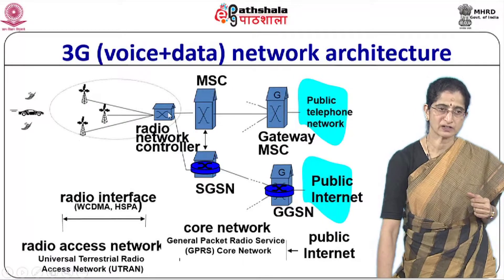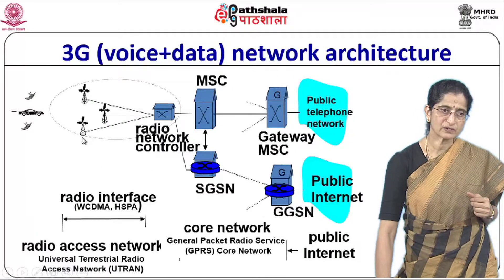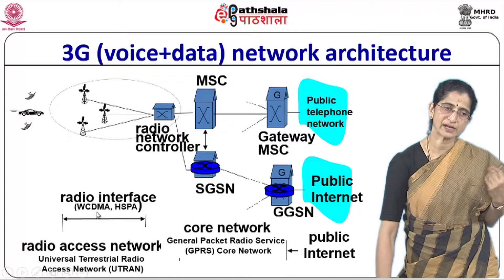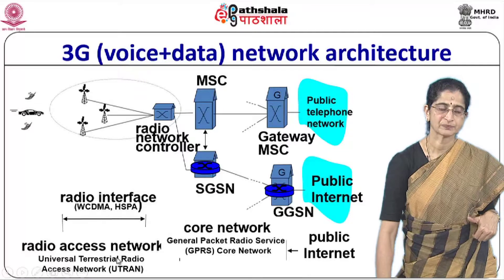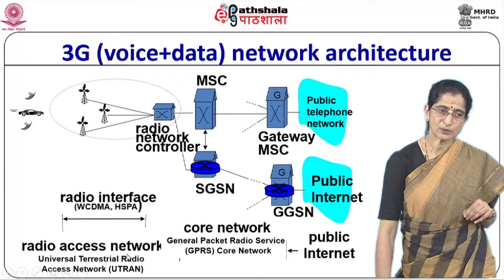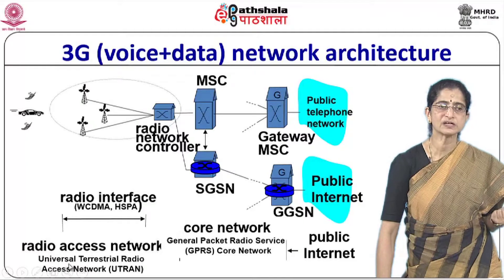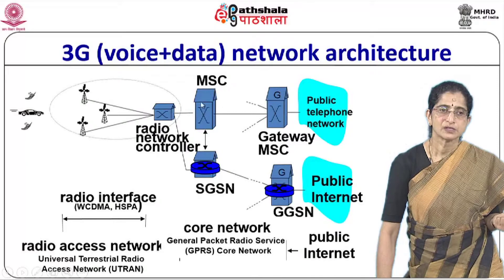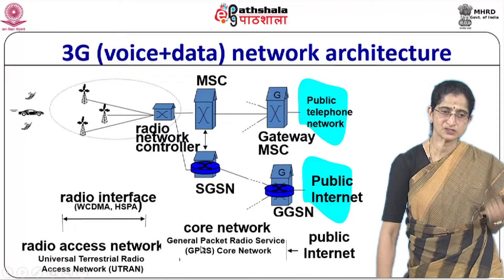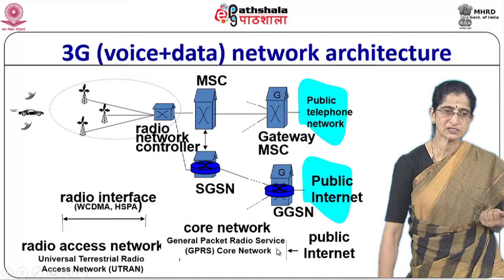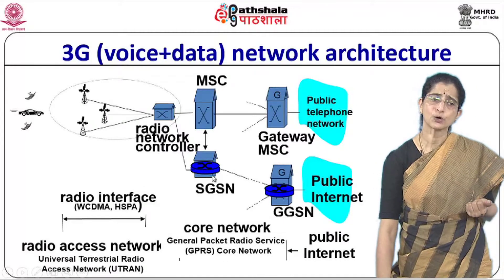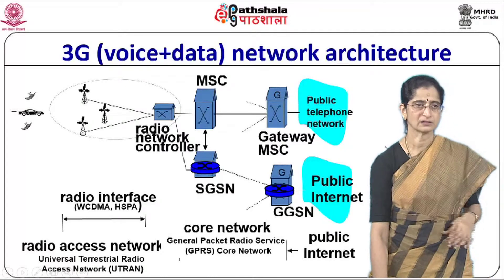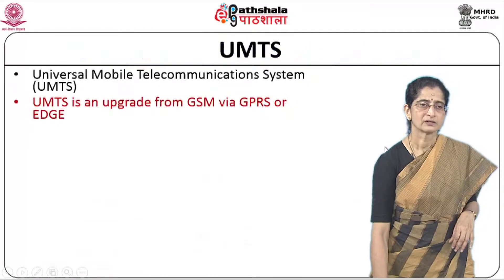Between the radio network controller and the base stations, we have a radio interface, which could be WCDMA or HSPA, referred to as the Universal Terrestrial Radio Access Network (UTRAN) in the case of UMTS. The part handling GPRS — General Packet Radio Service — is referred to as the core network, which connects to the public internet.